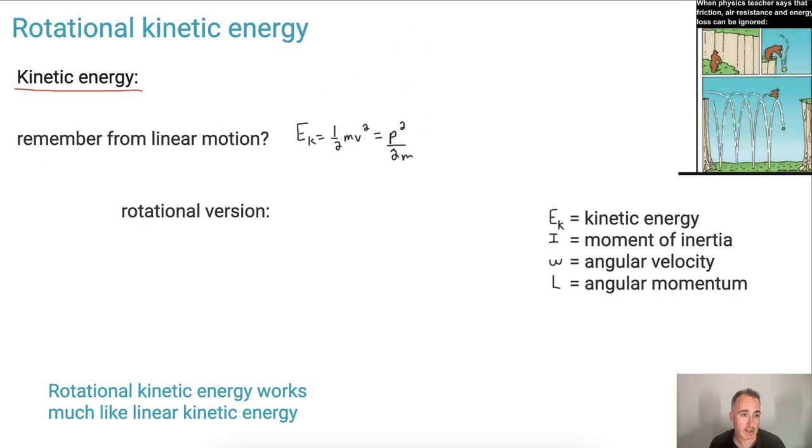However, for rotational, we have a version of that as well. So let's write this one down here. So it goes E_K, and if you know how this first one goes, then you'll see how the second one goes. So it's still one-half going on here. But instead of mass, remember the rotational equivalent is moment of inertia. And instead of v, we're going to put in omega squared.